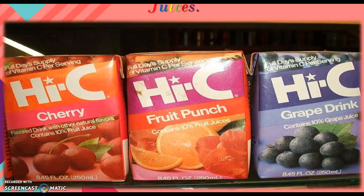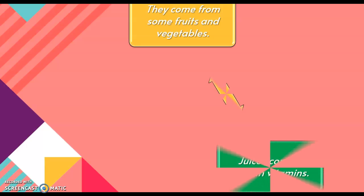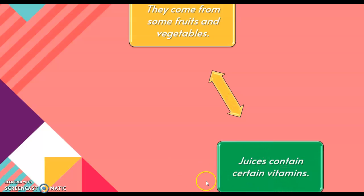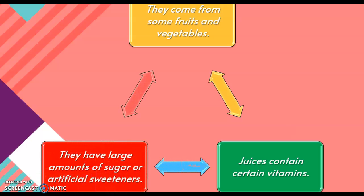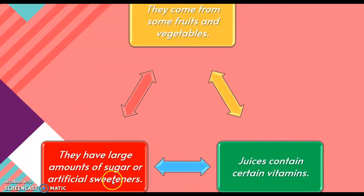Now let's go over juices. Juices come from fruits and vegetables — we have apple juice, pear juice, banana juice, and even tomato juice. Juices contain certain vitamins and nutrients which are vital for our bodies. However, the negative part is that juices contain a large amount of sugar or artificial sweeteners. A box of juice may say 'zero sugar,' but what they don't mention is that it contains artificial sweeteners, which are chemicals.